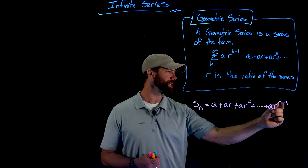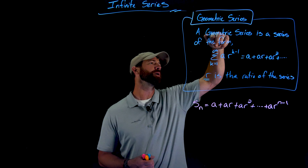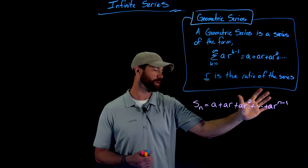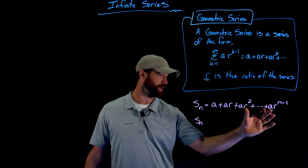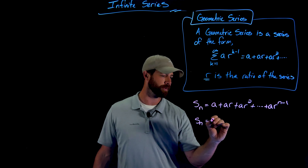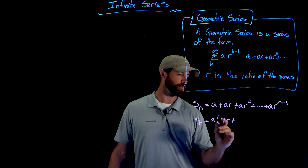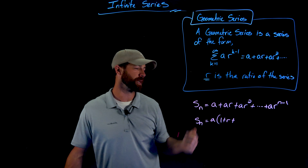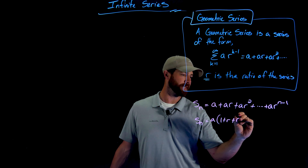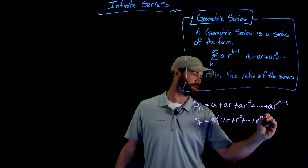We only go to n minus 1 because of that subtraction of 1 — when we plug in n, the exponent is n minus 1 for that very last term. One other manipulation: we can always factor out the common factor of a from all of these terms. So we can write it with just the a factored out. That's also the constant multiple rule we saw earlier — it just makes things a little easier when things get complicated.